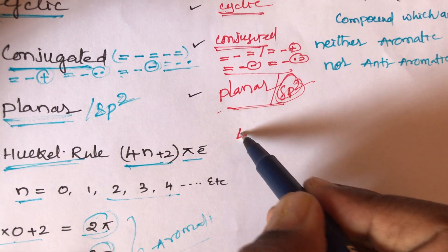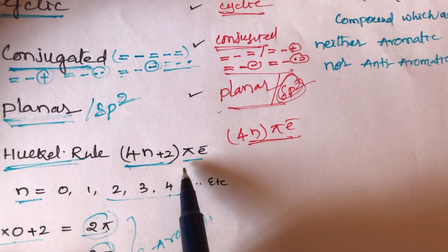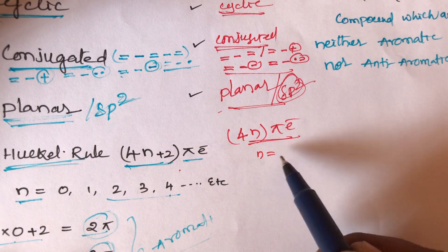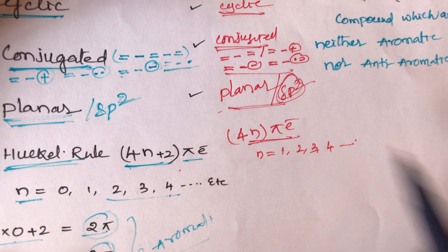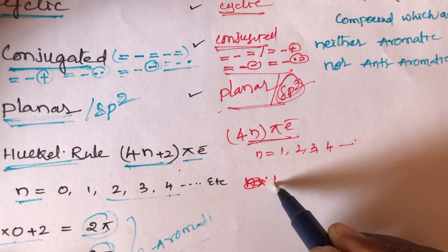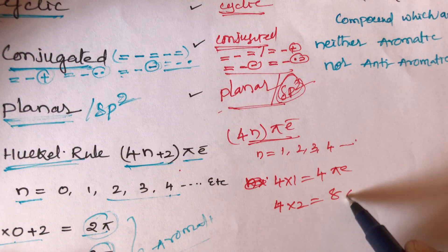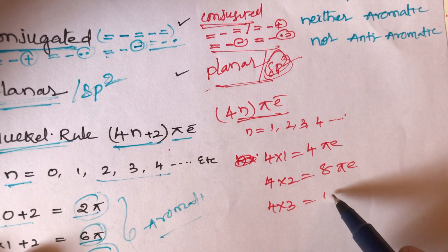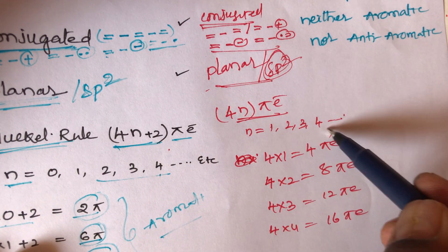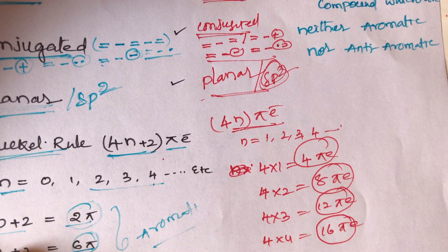The fourth condition for anti-aromatic compounds is that they contain 4n pi electrons (not 4n + 2). With n = 1: 4 pi electrons; n = 2: 8 pi electrons; n = 3: 12 pi electrons; n = 4: 16 pi electrons. So a compound with 4, 8, 12, or 16 pi electrons is always anti-aromatic.